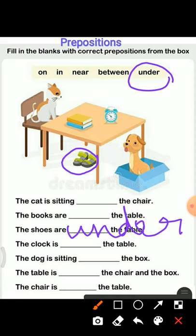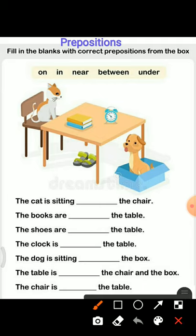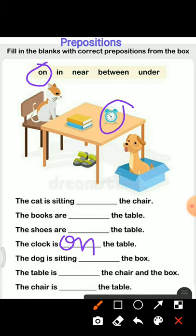Okay, then next one: the clock is ___ the table. This is the clock — where is it? It is on the table. So we will choose the correct word and write here: on the table. The clock is on the table.